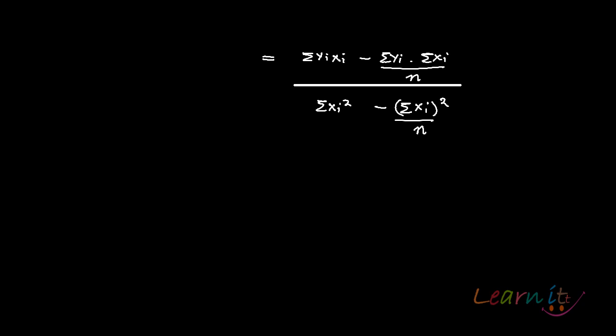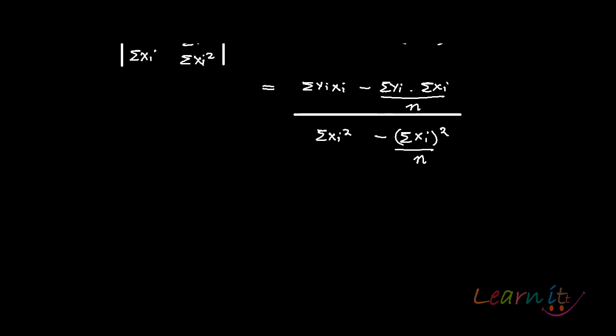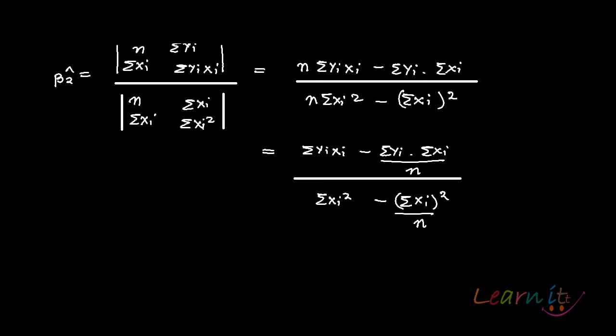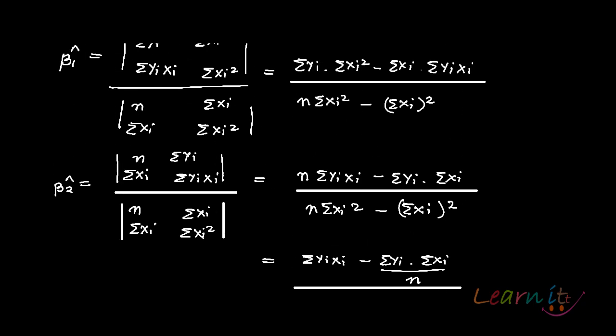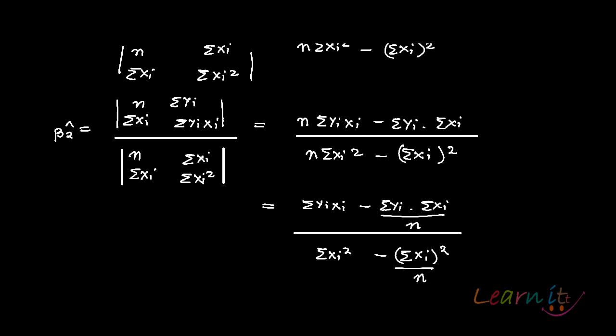In our earlier recording, we tried to find out beta 1 hat and beta 2 hat under the simple linear regression model. Now in this recording, what we are going to do is simplify the beta 2 hat estimator.